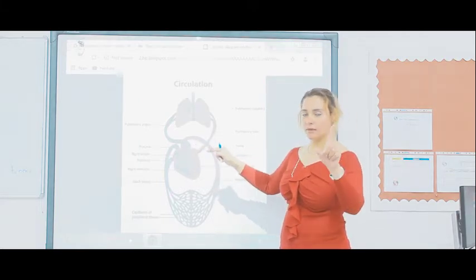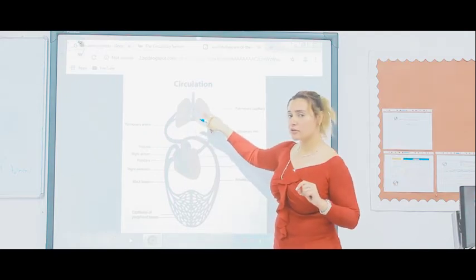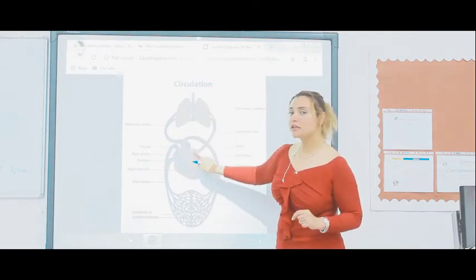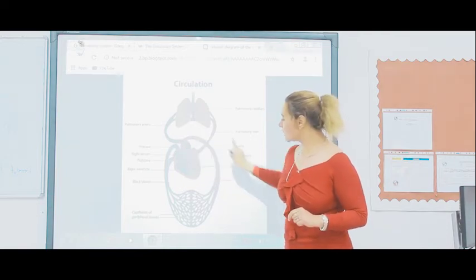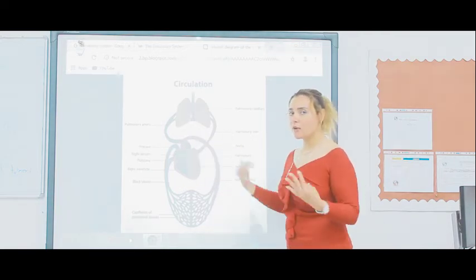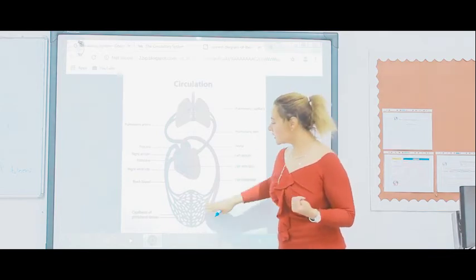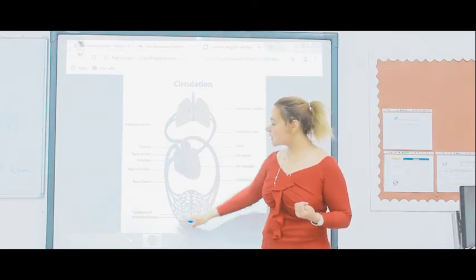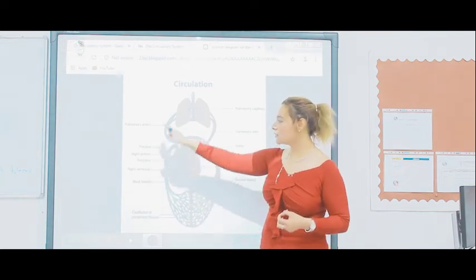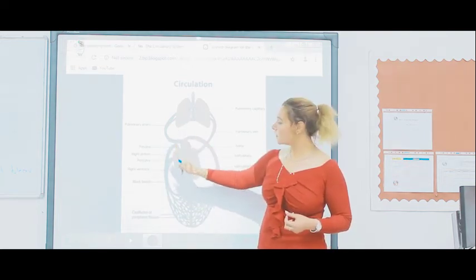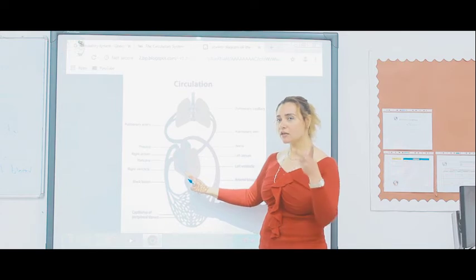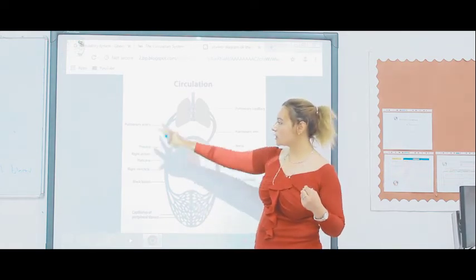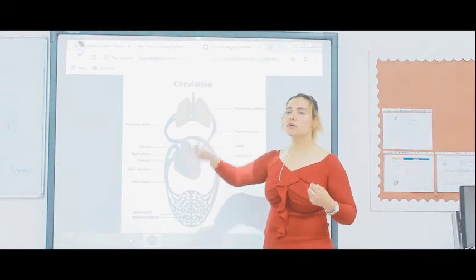One more time: the pulmonary vein brings oxygenated blood from the lungs to the left atrium. From the left atrium to the left ventricle, and then to the aorta. From the aorta to all parts and organs of the body. The organs take all the oxygen and nutrients, then send the blood through the capillaries and then to the veins. The veins are collected in the main vein, the vena cava. The vena cava enters the right side of the heart through the right atrium, then the right ventricle. The right ventricle contracts to send the blood to the pulmonary artery to be cleaned — and over and over again.